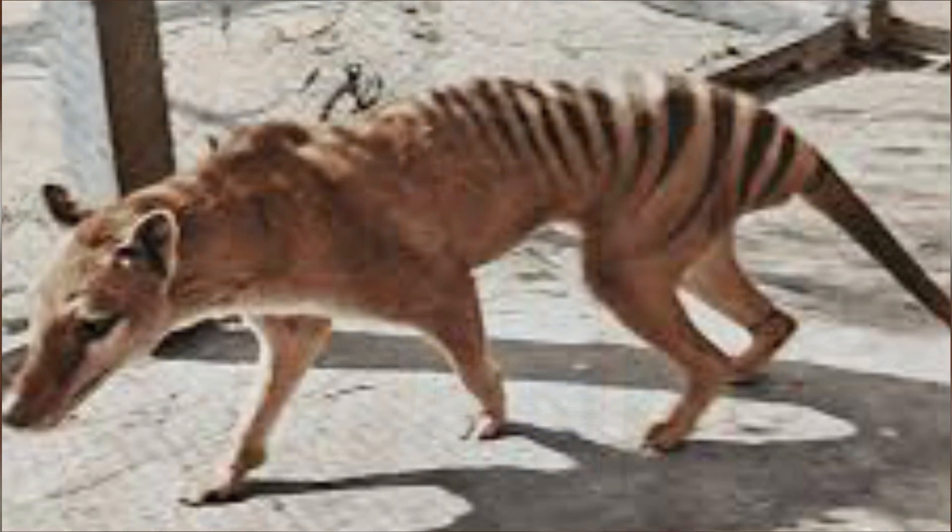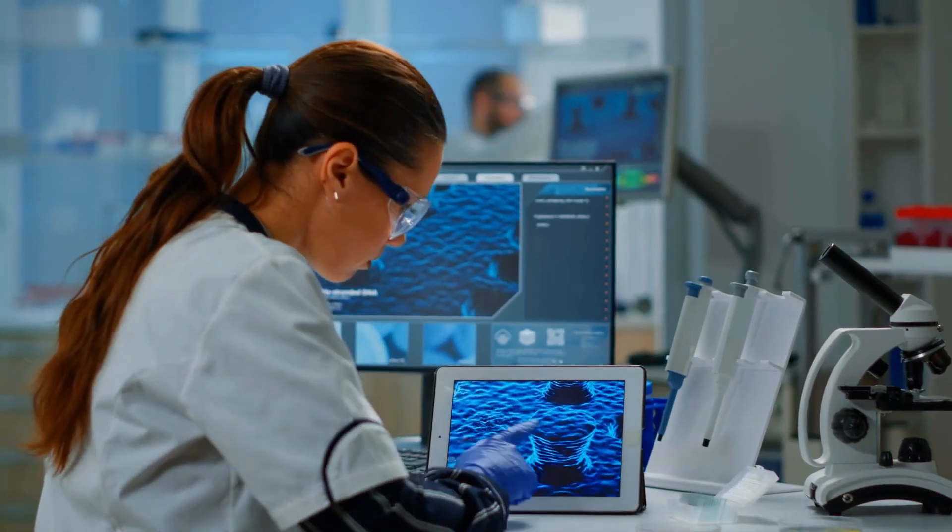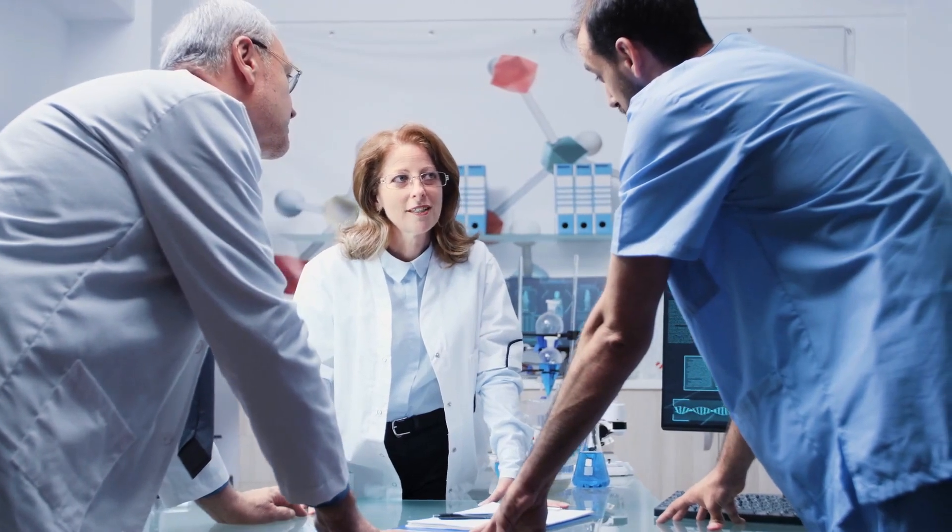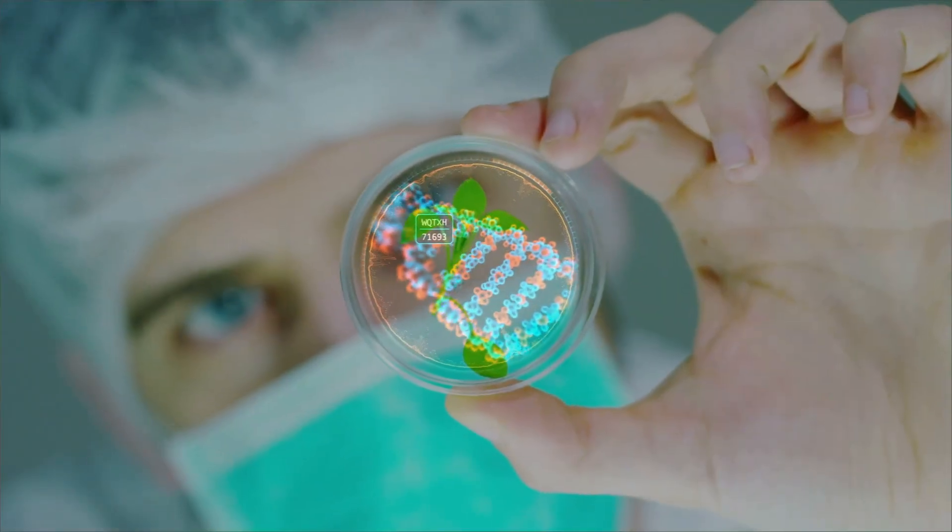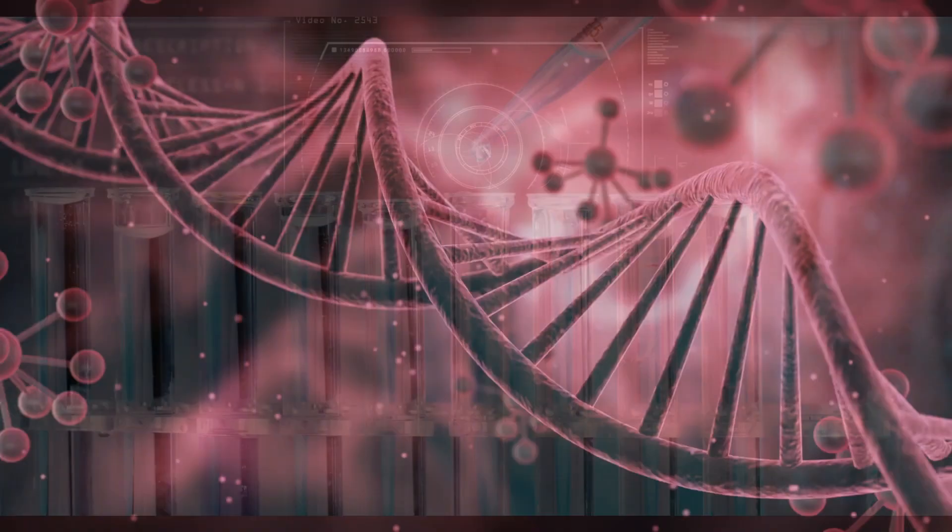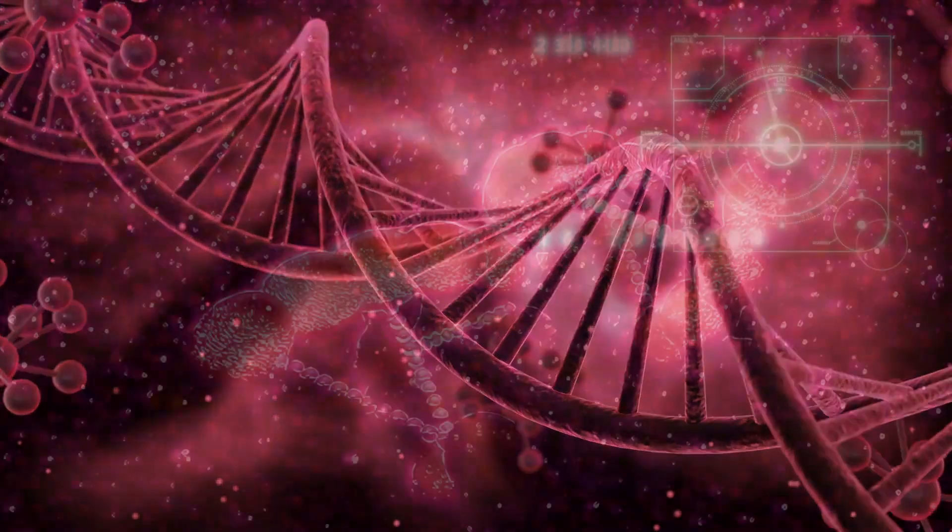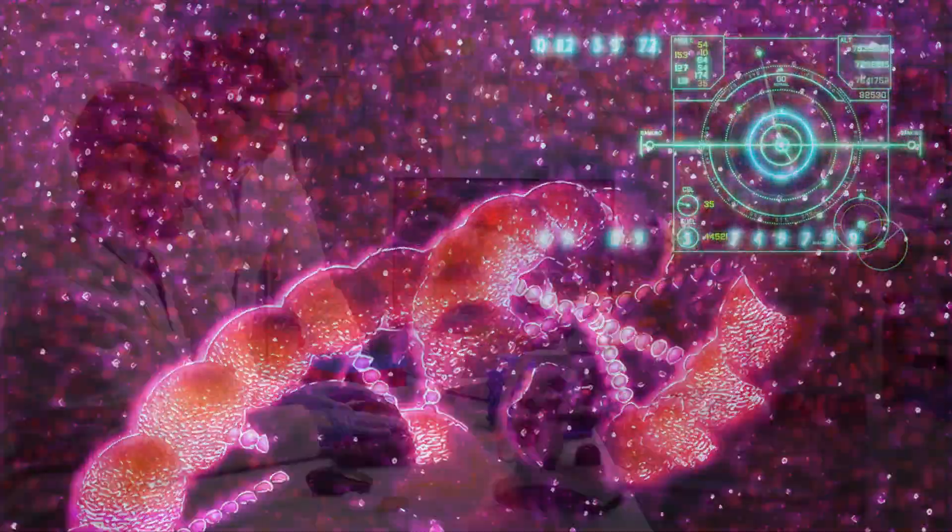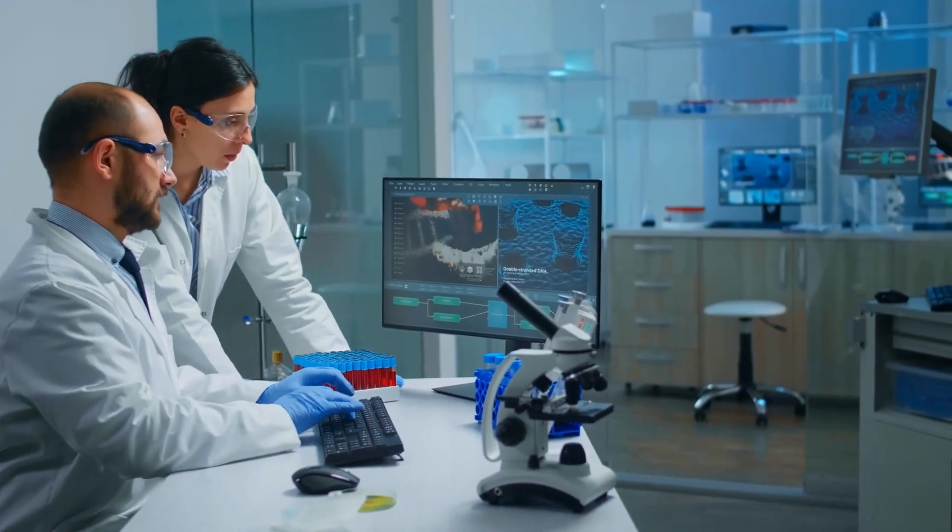With new technology picking up in recent years, de-extinction is becoming a more serious science. A new DNA tool called CRISPR is a gene editing technique that can be used to recreate the genetic blueprint of an animal. Basically, you can take the DNA from a closely related living species and make all the edits that you see and all the differences from a thylacine genome.